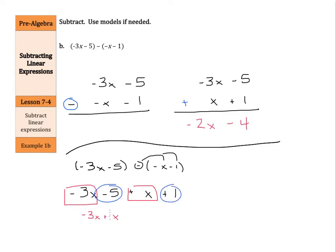And then we would have a -5 + 1. Well, this simplifies into -2x - 4 again. So again, either way you would like to try this. Maybe try both as you solve these. Again, the more tools you have, oftentimes the better.